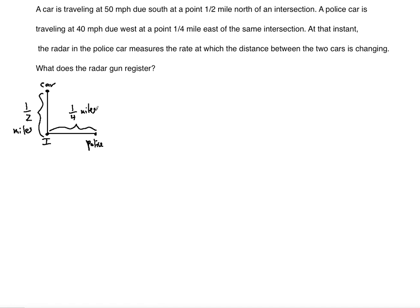Now we use related rates. Related rates involves multiple variables where, as one variable changes, the others change as well. In this problem we have three rates: the speed of the car coming from the north, the speed of the police car coming from the east, and the third rate we need to find — the rate at which the distance between the two cars is changing.